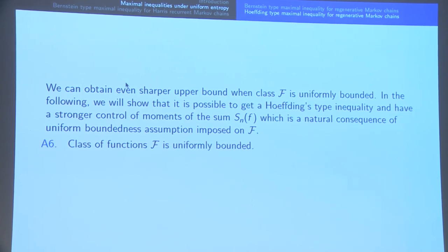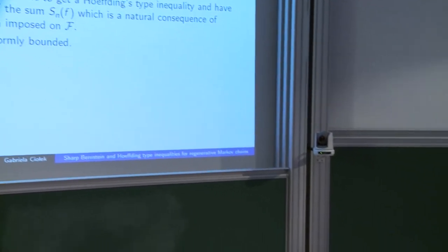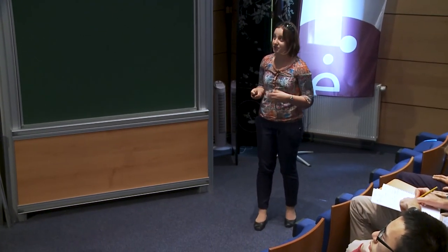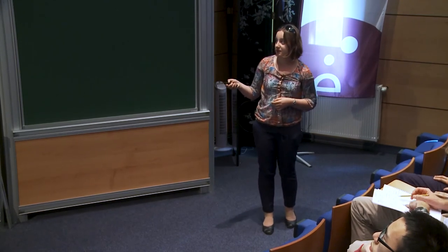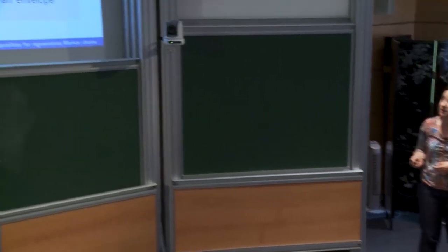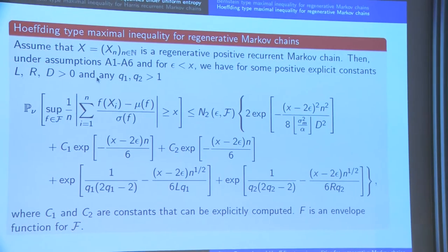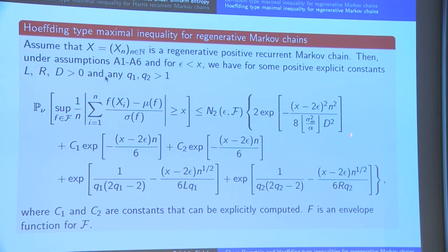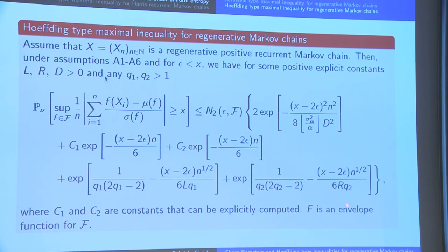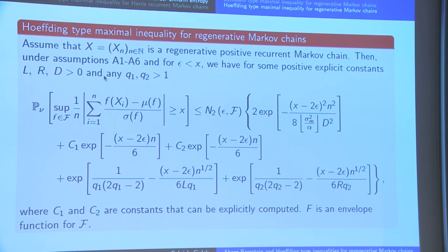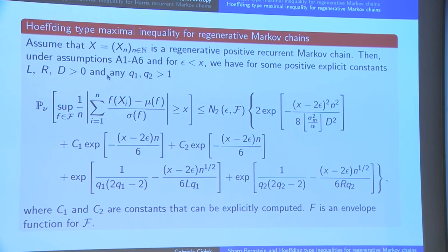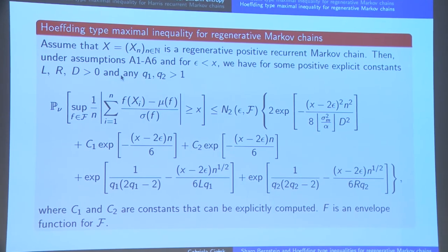We can obtain a sharper bound when the class F is uniformly bounded. In this case we are able to obtain a Hoeffding-type inequality, since we have a sharper control of the moment-generating function. Under the assumption that F is uniformly bounded, we obtain the Hoeffding-type maximal inequality for regenerative Markov chains. For sub-exponential IID random variables, we retrieve a Hoeffding-type bound. The constants L and R take different forms in the bounded case, giving sharper control of the tail probability.